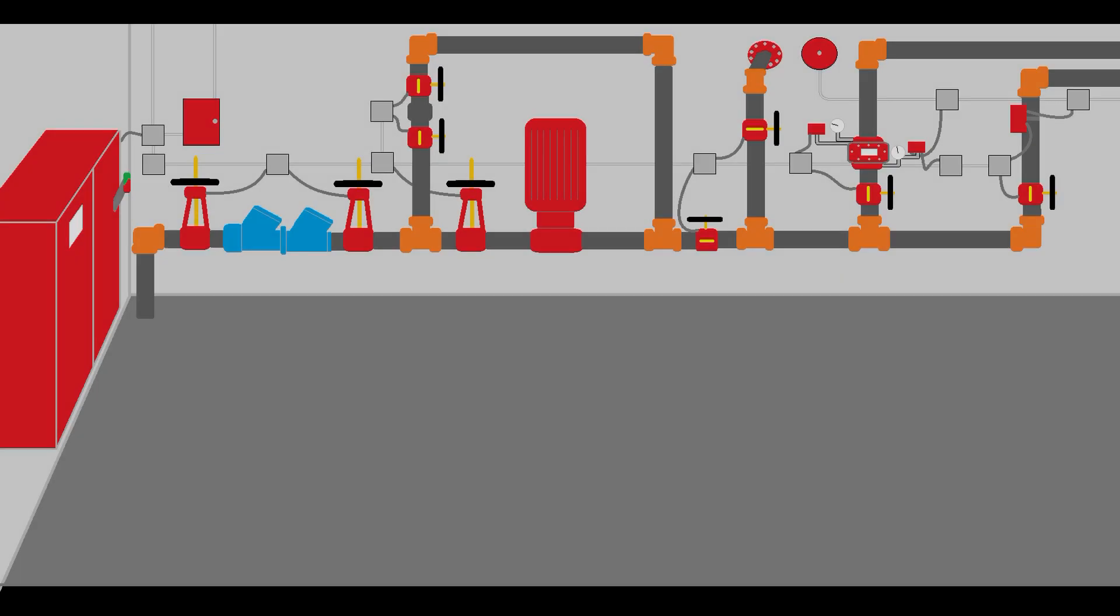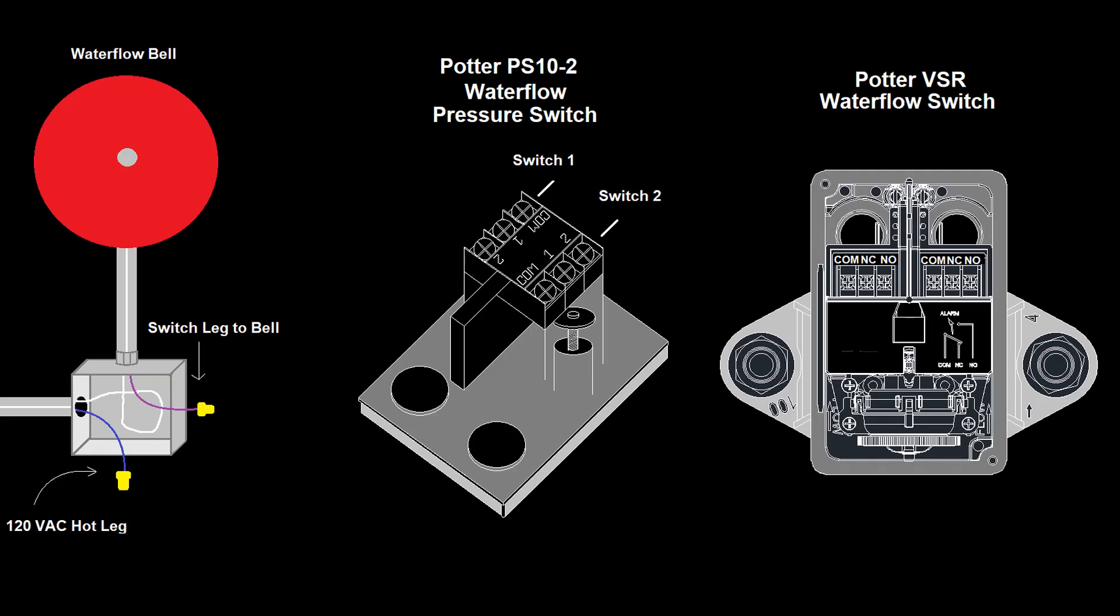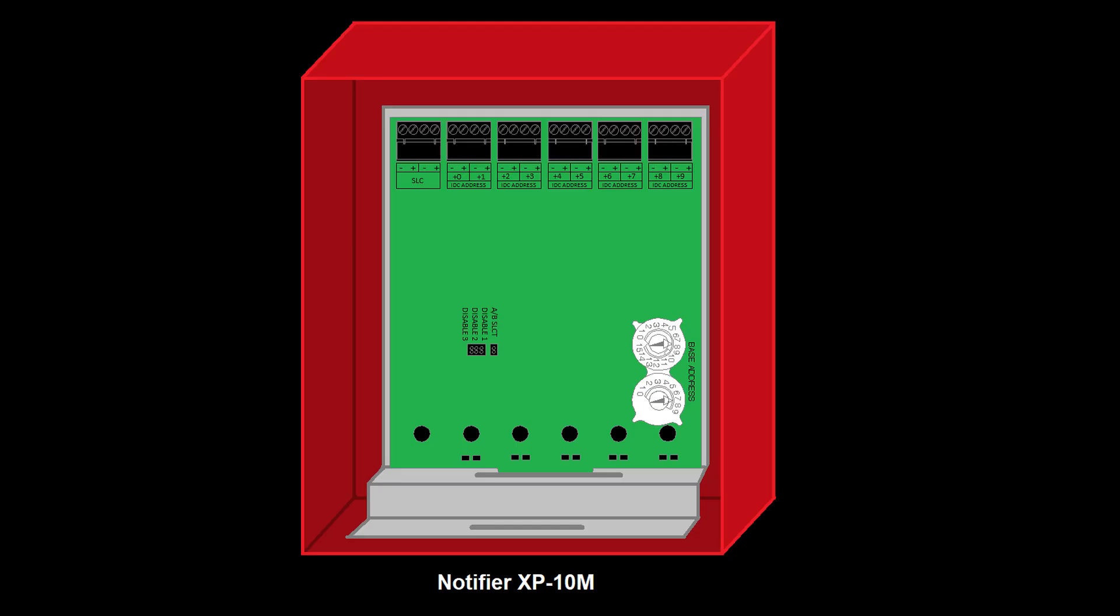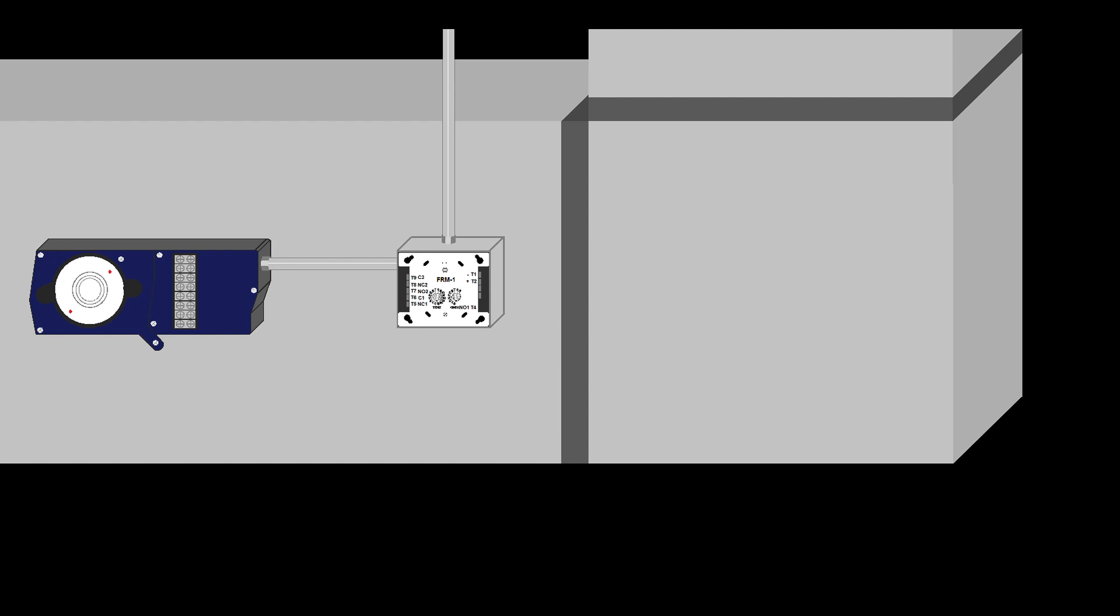In the next video, we'll begin looking at how some of the unique SLC devices are wired to their monitor modules, such as the devices in the pump room, like the valve tampers and water flow switches. And we'll look at some of the other unique SLC devices, like the kitchen hood system, duct detectors, etc.